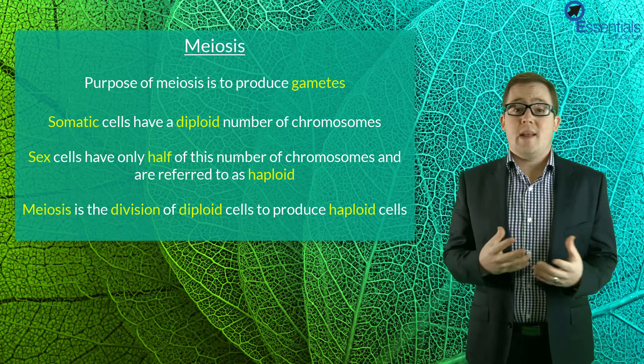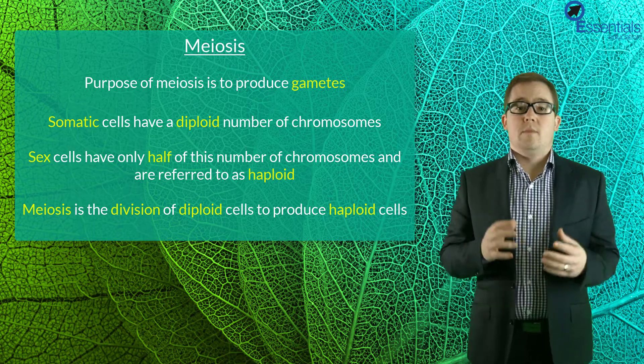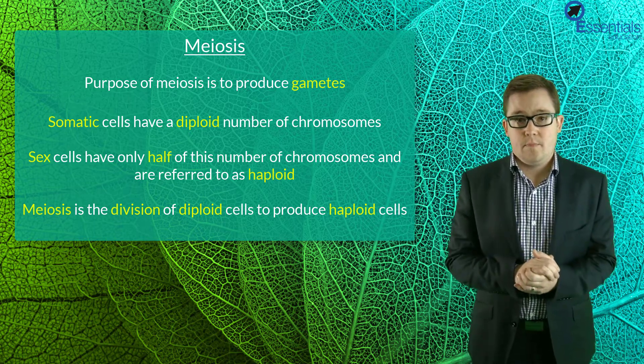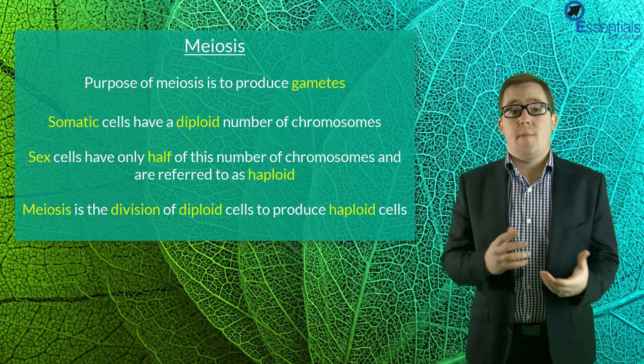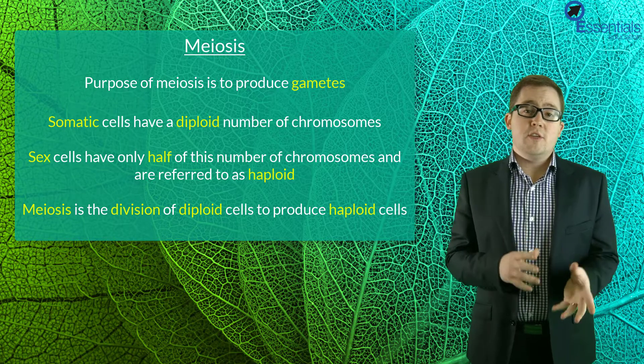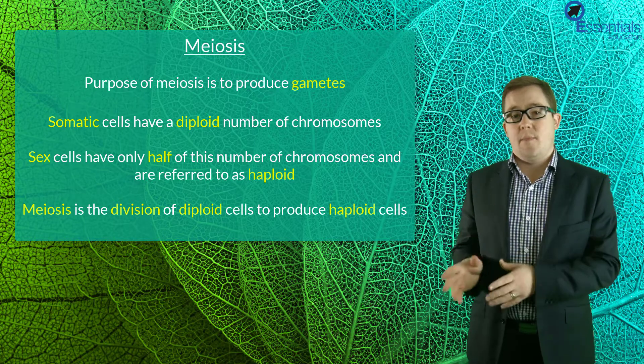Now body, or what we call somatic cells in organisms, have what's termed a diploid number of chromosomes, whereas sex cells only have half this number and are referred to as haploid. So meiosis will be the division of diploid cells to create haploid cells.